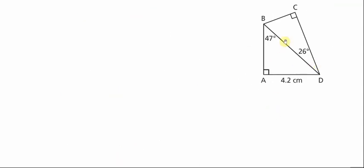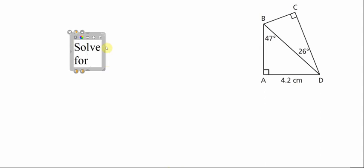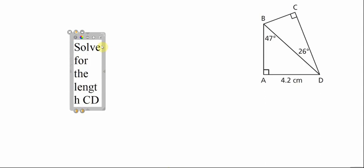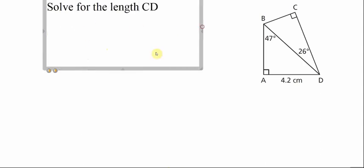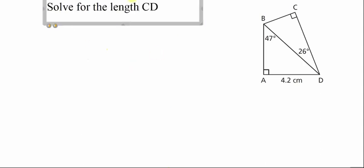I have this double triangle stack, and we can pick anything we don't know given the context. A simple question would be: solve for the length CD. We can see that triangle CD is a right triangle, connected to the lower triangle through a common line.